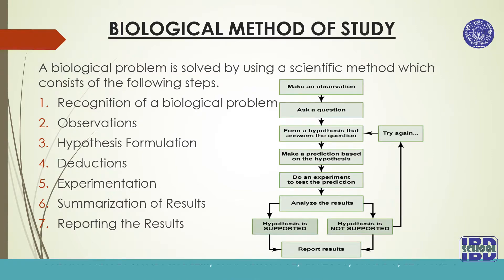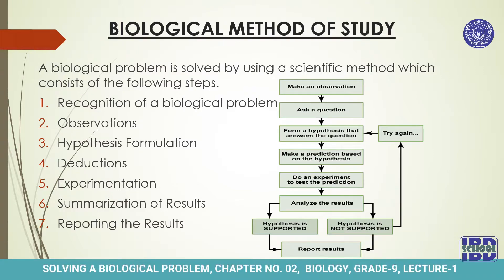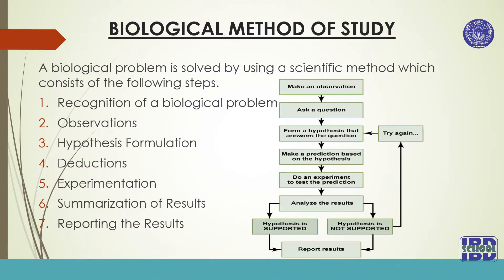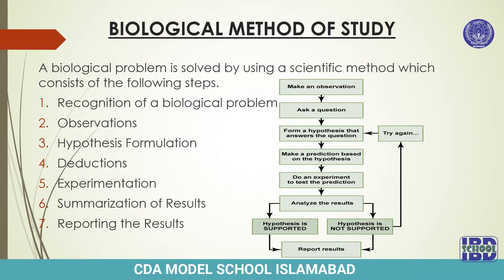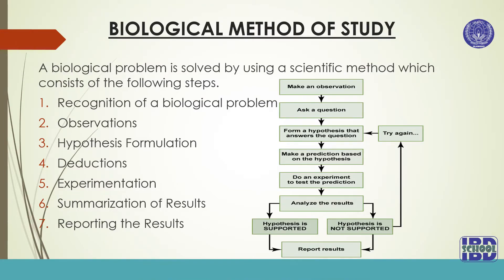A biological problem is solved by using a scientific method which consists of the following steps: number one, recognition of a biological problem; number two, observations; number three, hypothesis formulation; number four, deductions; number five, experimentations; number six, summarization of results; and number seven, reporting the results.